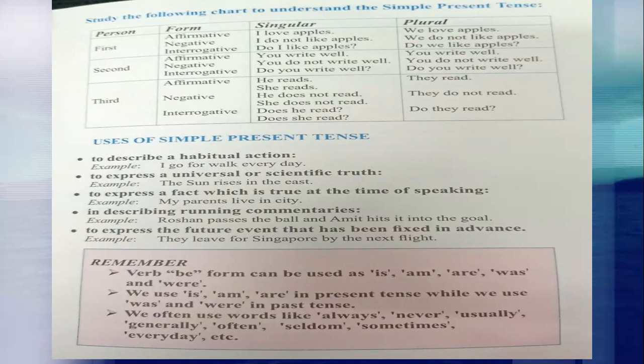Starting with first person affirmative: 'I love apples.' In plural it becomes 'We love apples.' For negative: 'I do not like apples' becomes 'We do not like apples.' For interrogative: 'Do I like apples?' becomes 'Do we like apples?' I hope you have understood these three forms.